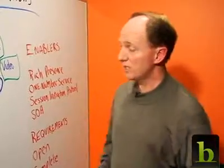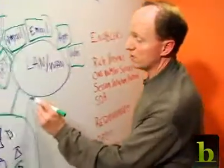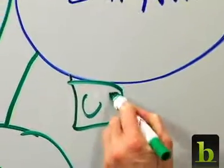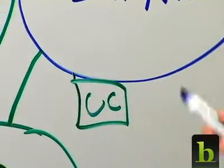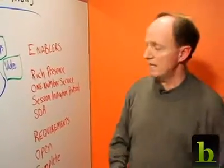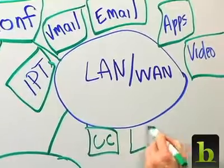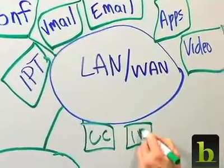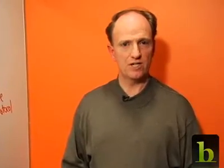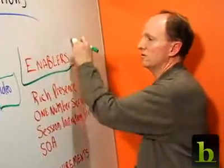And the answer is Unified Communications. Unified Communications starts with a unified communications suite that sits on your network. It may include, or may have separately, an instant messaging service. So what functionality do you need from a unified communications solution? What are the enablers?